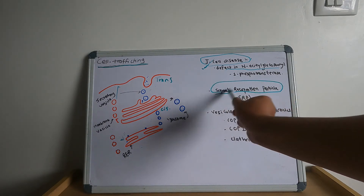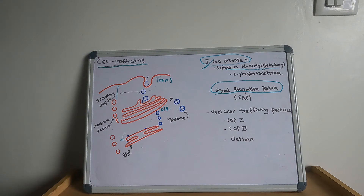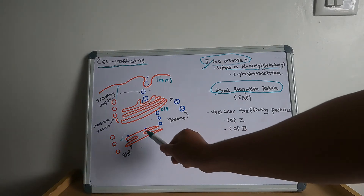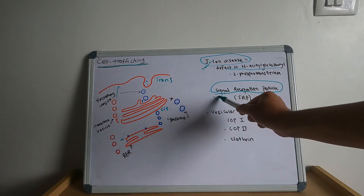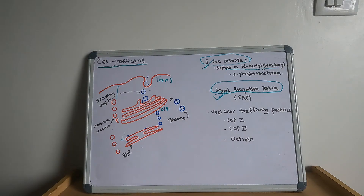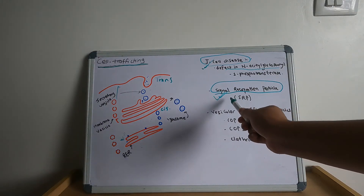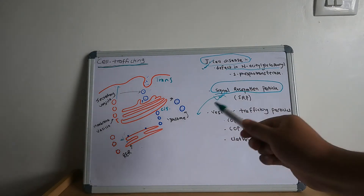Now let us move towards the signal recognition particle. The signal recognition particle (SRP) is an abundant cytosolic ribonucleoprotein that traffics polypeptide-ribosome complexes from the cytosol to the rough endoplasmic reticulum. Absence or dysfunction of the signal recognition particle leads to accumulation of large numbers of proteins in the cytosol.